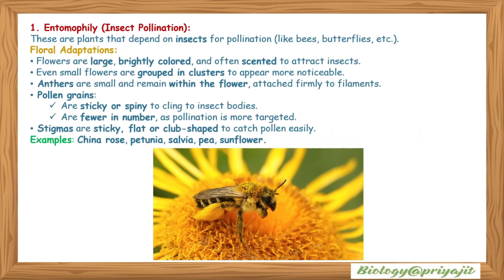Entomophily — insect pollination: these are plants that depend on insects like bees and butterflies for pollination. Floral adaptations include large, brightly colored, often scented flowers to attract insects. Small flowers may be grouped in clusters to appear more noticeable. Anthers are small and remain within the flower. Pollen grains are sticky or spiny to cling to insect bodies and are fewer in number since pollination is more targeted. Stigmas are sticky, flat, or club-shaped to catch pollen easily.